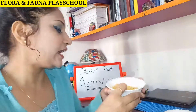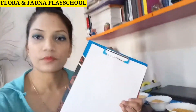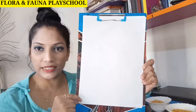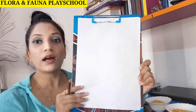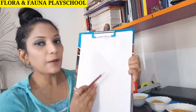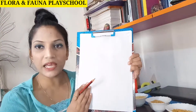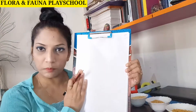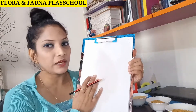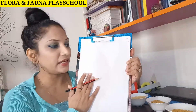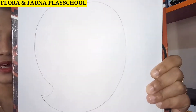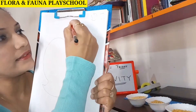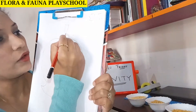So, chal yeh activity start karte hain. Kids, you have to take a white sheet and draw a mango on it. Aapko ek white sheet leni hai — ghar pe mamma ko boliyega, aapko ek white sheet dengi. Ya aap drawing book bhi le sakte hain. Uspe aapko ek mango draw karna hai — aisa ek mango banana hai — aur upar uske ek stem banana hai aur ek leaf.